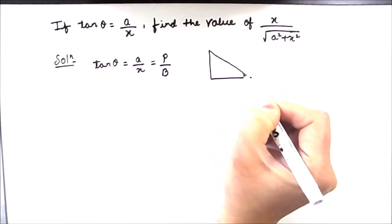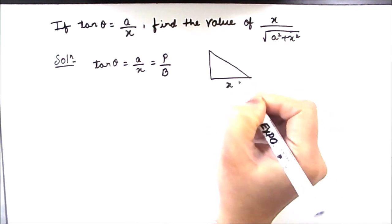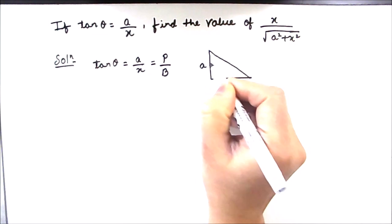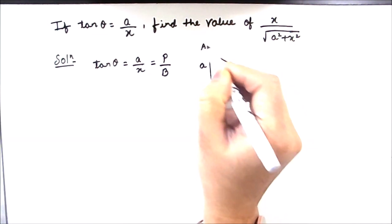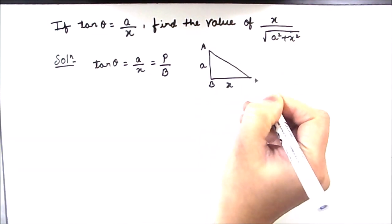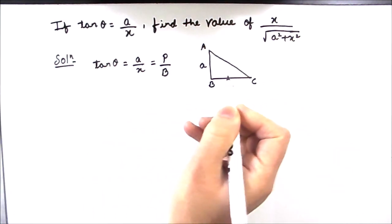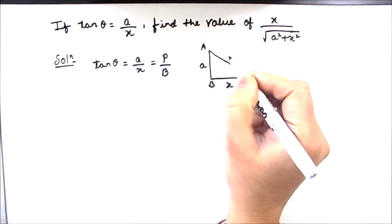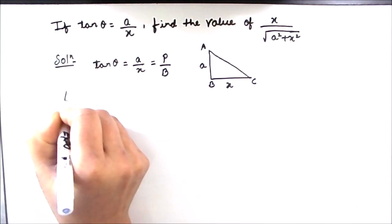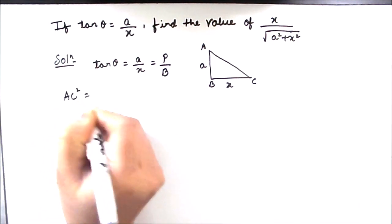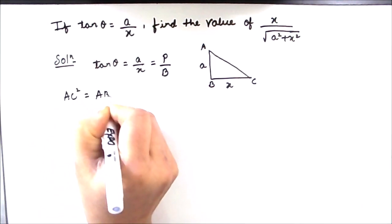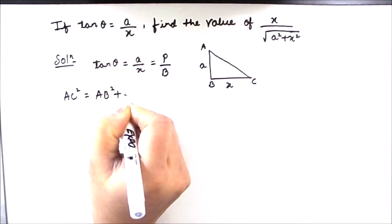With base as x and perpendicular as a, let us name it as triangle ABC. Now by using the Pythagoras theorem we can find the value of hypotenuse. AC square is equal to AB square plus BC square.